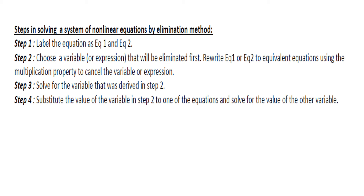Steps in solving a system of nonlinear equations by elimination: Step 1, label the equations as equation 1 and equation 2. Step 2, choose a variable or expression to eliminate first. Step 3, rewrite equation 1 or 2 to equivalent equations using the multiplication property to cancel the variable or expression. Step 4, solve for the variable derived in step 2. Then substitute that value into one of the equations to solve for the other variable.